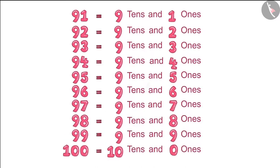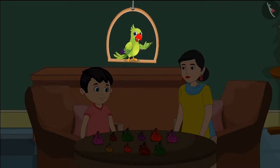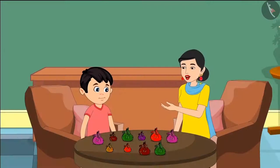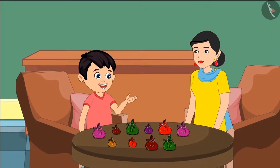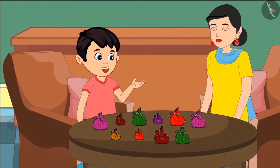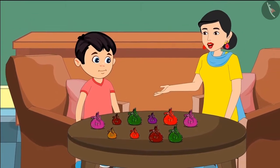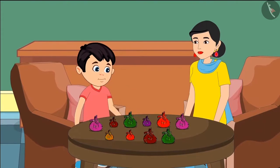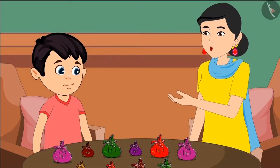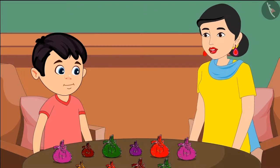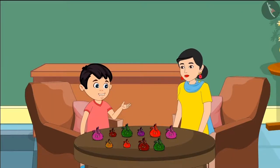They corrected all the numbers and wrote them down. Chotu's birthday is coming up and every year Chotu gives some gifts to all his friends. Hey Chotu, what will you give to your friends this time? Mummy, this time I will give them small little packets of toffees. Oh wow, this would be a very cute gift. Well, tell me Chotu, how many toffees have you brought for your friends? Mummy, let me count them.